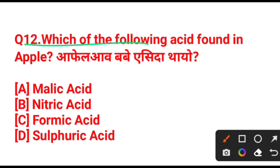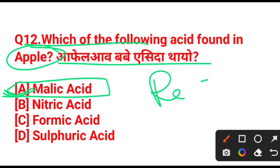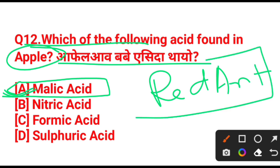Which of the following acids is found in an apple? Before answering, different fruits and vegetables contain different acids. Option A — malic acid. Malic acid is the answer. And for red ants, the acid is formic acid — formic acid is found in red ants.